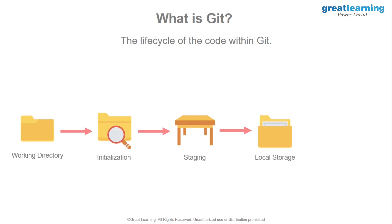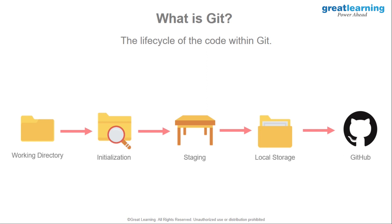Now that the work is done and saved in local storage, the next step is to push it to GitHub or the distributed cloud. The code is pushed from local storage to the cloud or the distributed repository — with Git, that's GitHub — where the code is stored.